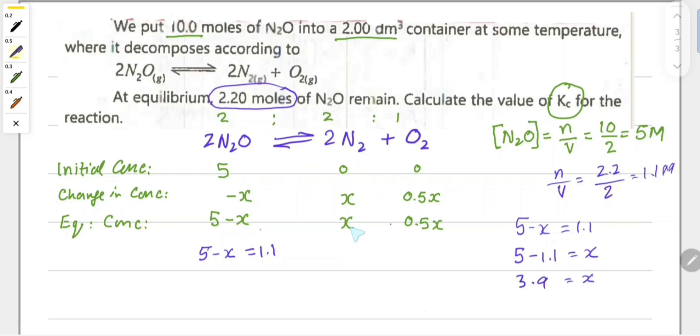At equilibrium, nitrogen gas concentration is x, which equals 3.9 molar. And 0.5 times x equals 0.5 times 3.9, which gives 1.95 molar. So the concentration of oxygen gas is 1.95 molar, nitrogen gas is 3.9 molar, and nitrogen dioxide concentration is 1.1 molar.